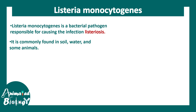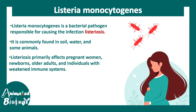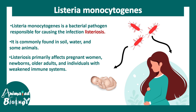Listeria monocytogenes is commonly found in soil, water, and in some animals. Listeriosis primarily affects pregnant women, newborns, and older adults, but pregnant women are at the highest possible risk. People with weakened immune systems are also vulnerable to infection.